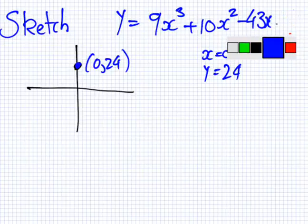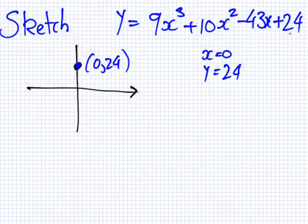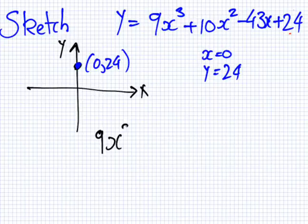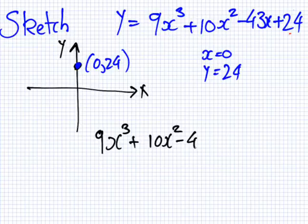So the real problem, I suppose, is trying to find where it crosses the x-axis. So how do we find where it crosses the x-axis? Well, that's when you make y equal to 0. So you want to solve 9x³ + 10x² - 43x + 24 = 0. You make y equal to 0.